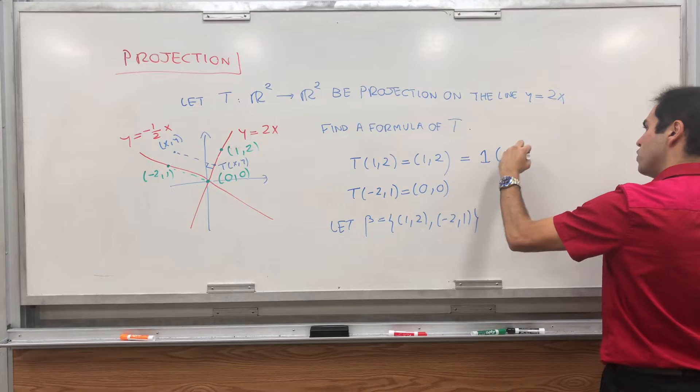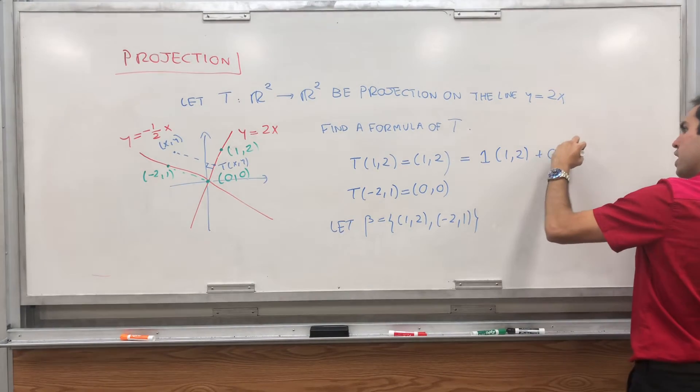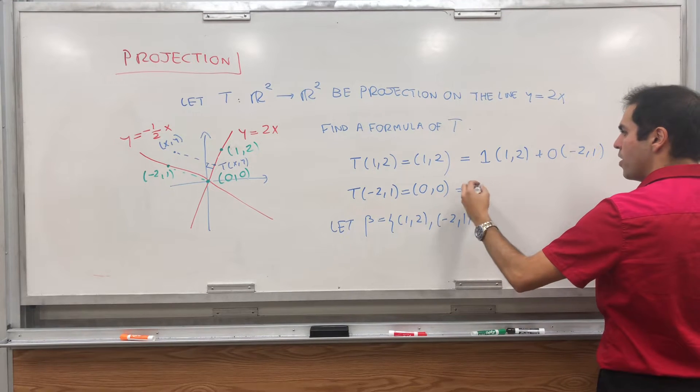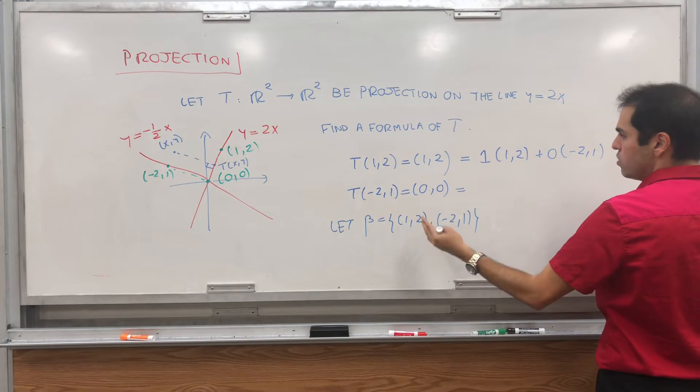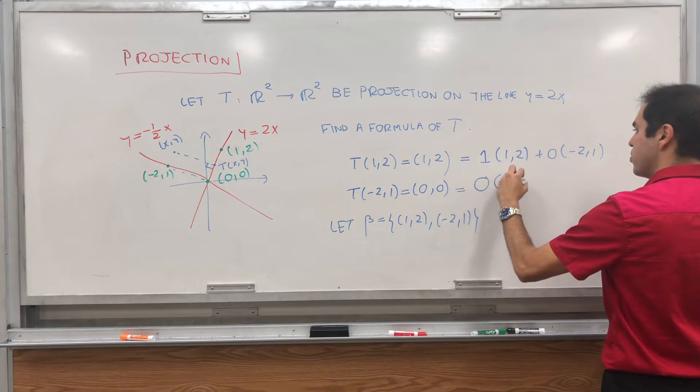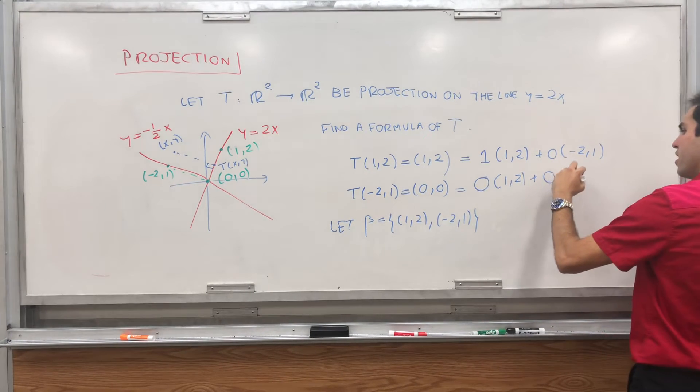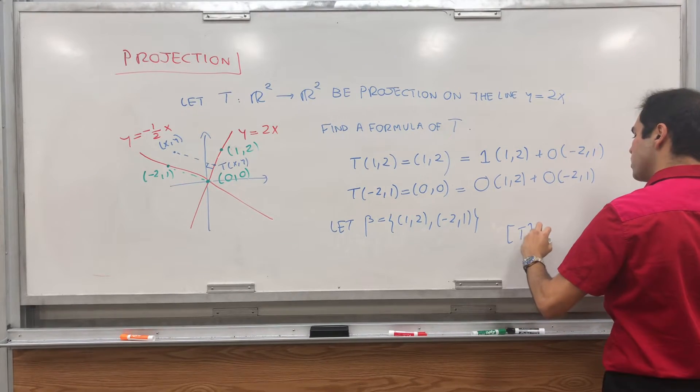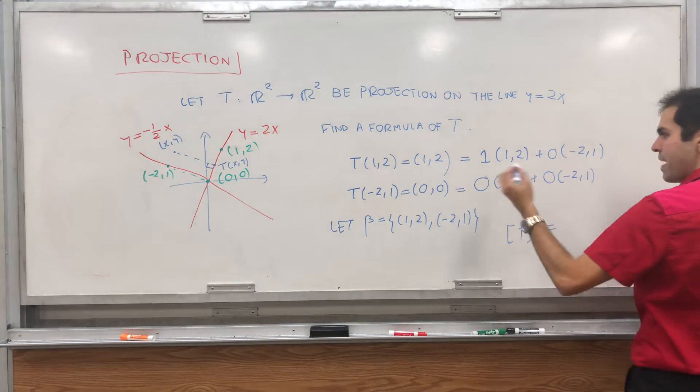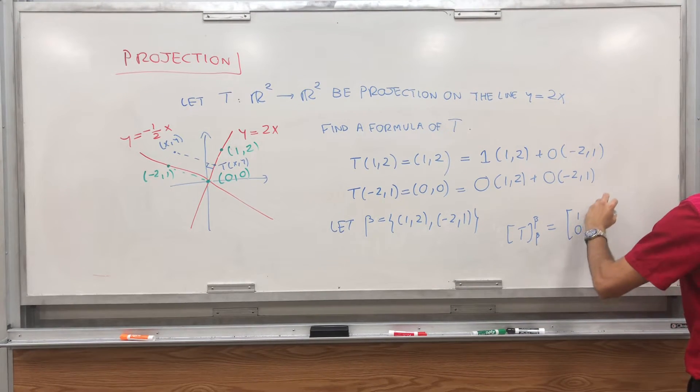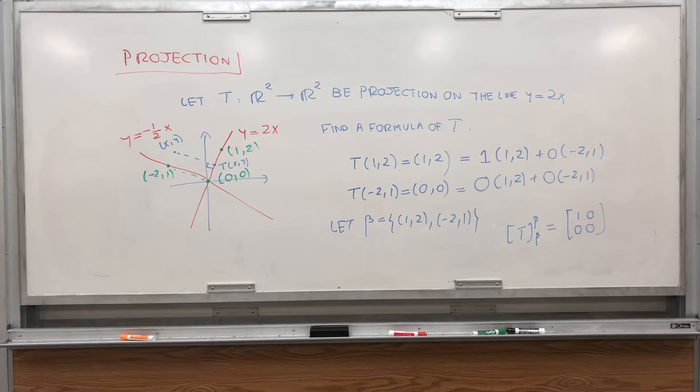which is 1 times 1, 2, plus 0 times minus 2 comma 1. And T of minus 2 comma 1 is 0, so it's 0 times 1, 2, plus 0 times minus 2 comma 1, which tells us that the matrix of T with respect to this old basis is 1, 0, 0, 0.